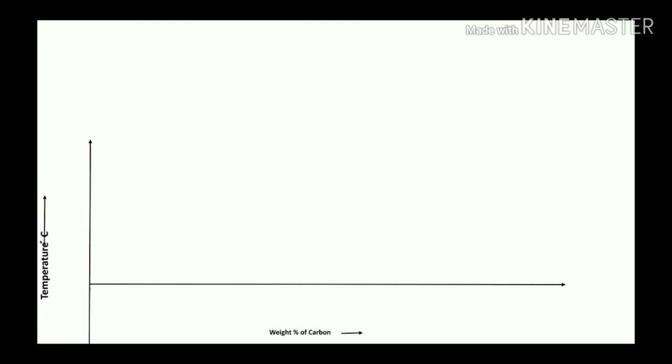The x-axis represents the rate percentage of carbon, and the y-axis represents temperature in degrees centigrade.